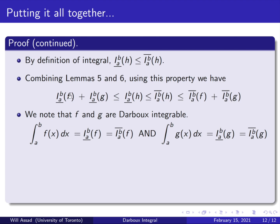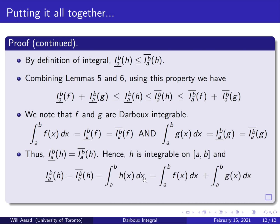Adding this into our chain of inequalities, we conclude that these two values must be equal because we have a squeezing effect: if a ≤ b ≤ a, then b = a. Therefore the lower integral from a to b of h equals the upper integral from a to b of h. By definition of the Darboux integral, h is integrable on [a, b], and the integral from a to b of h(x) dx equals the integral from a to b of f(x) dx plus the integral from a to b of g(x) dx, which is exactly what we wanted to show. That completes the proof.